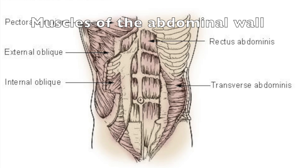They connect the ribcage and the vertebral column to the pelvis. A tough band of connective tissue that runs from the xiphoid process inferior to the pubic symphysis along the midline is called the linea alba, or the white line.